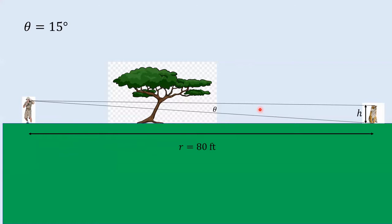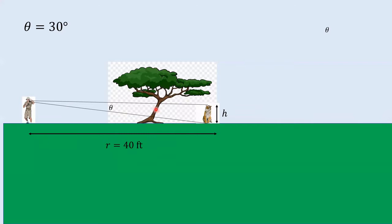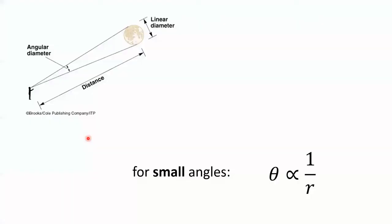Because if I go back here, this is a fairly small angle. And for this small angle and the next small angle, the rule seems to work. From 80 feet to 40 feet, we go from 15 degrees to 30 degrees. But now this angle is not so small. And the rule doesn't work very well. If I cut the distance from 40 down to 10, the angle does not go from 30 all the way up to 120.